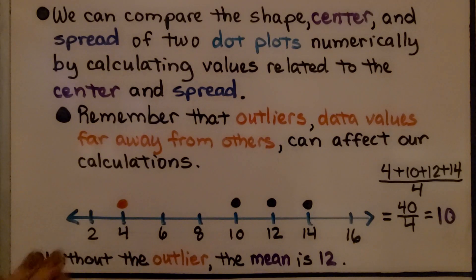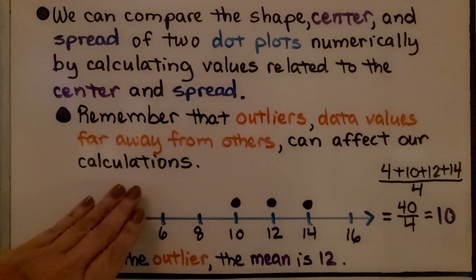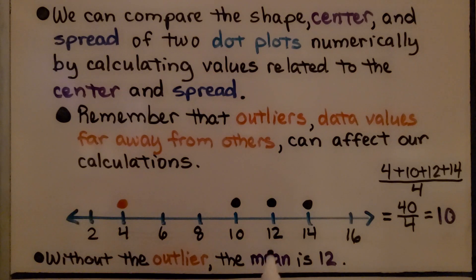If we didn't have the outlier, then the mean would be 12. It would be the number between 10 and 14. So the outlier can affect our calculations.